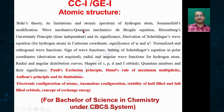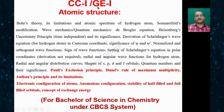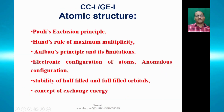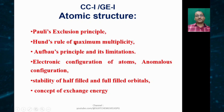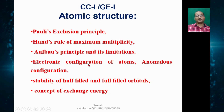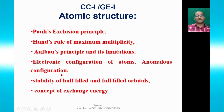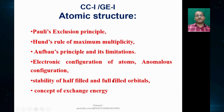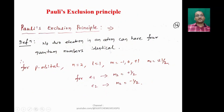This is the syllabus for CC1 paper for BSc Honours students and GU1 paper for generic students. Today we are going to talk about Pauli's exclusion principle, Hund's rule of maximum multiplicity, Aufbau principle and its limitations, electronic configuration of atoms, anomalous configuration of atoms, stability of half-filled and fully-filled orbitals, and the concept of exchange energy.